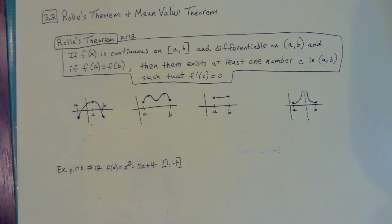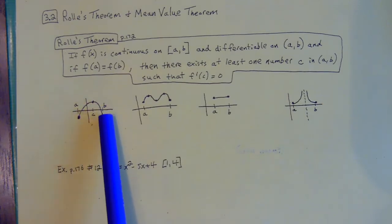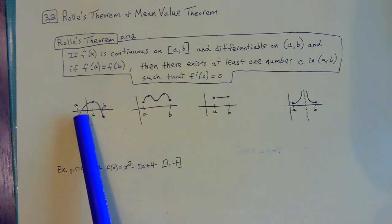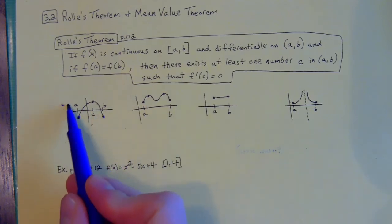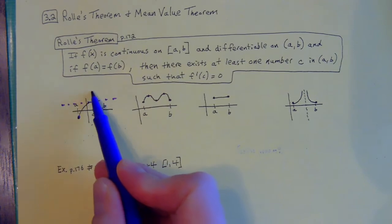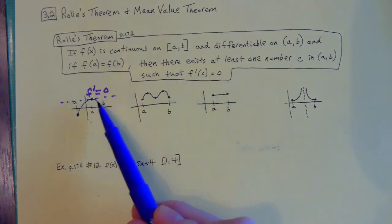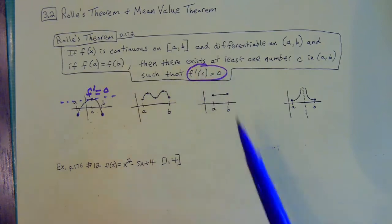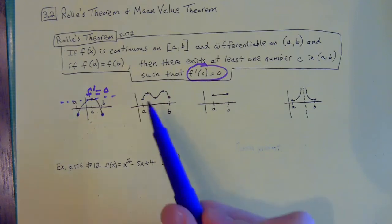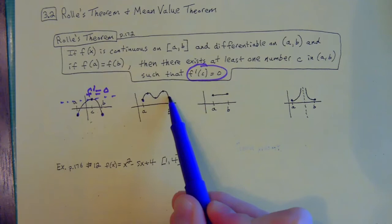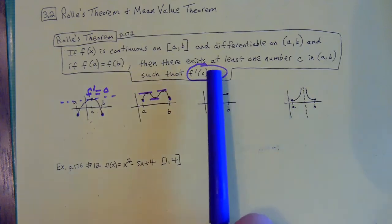It's kind of a common-sense theorem: if I have to go from one y-value and get back to that same y-value without lifting my pen, at some point I'm going to have to turn around. When I turn around, the graph levels off and the derivative equals zero. That's all Rolle's Theorem is saying — to get back from one point to that same y-value, your derivative has to equal zero at least once. The theorem just guarantees at least one such point.